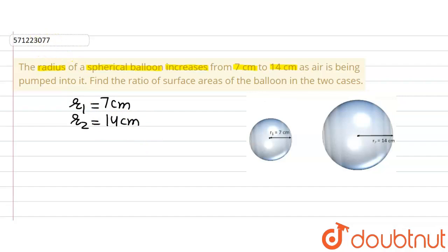Now the formula that we are going to use here is surface area of sphere. Surface area of sphere is equal to 4πr². This is the formula for surface area of sphere, where r is the radius of the sphere.